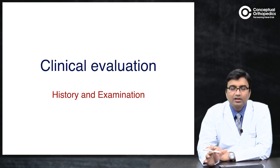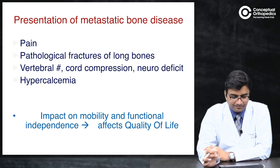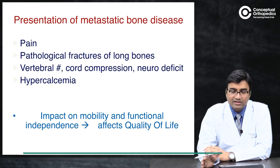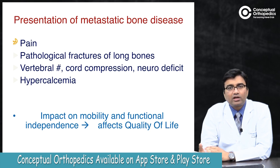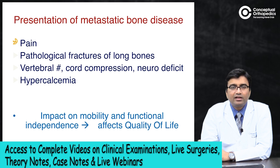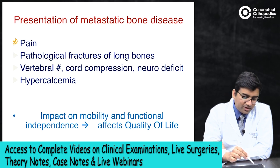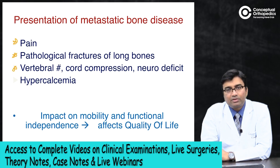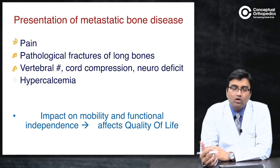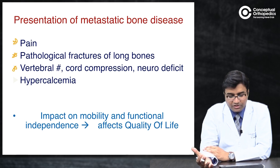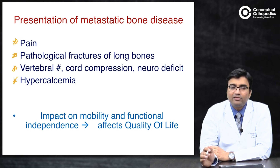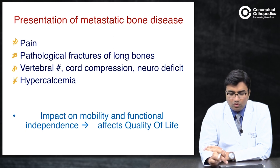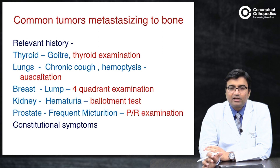First, it is very important to get your clinical evaluation with history and examination. How does a patient with metastatic bone disease present? Pain is the most common symptom. If it persists, cortex weakening may lead to pathological fracture. The most common site of metastasis is the vertebral bodies, presenting with back pain, pathological fracture, cord compression, neurological deficits, or hypercalcemia — all affecting mobility and quality of life.